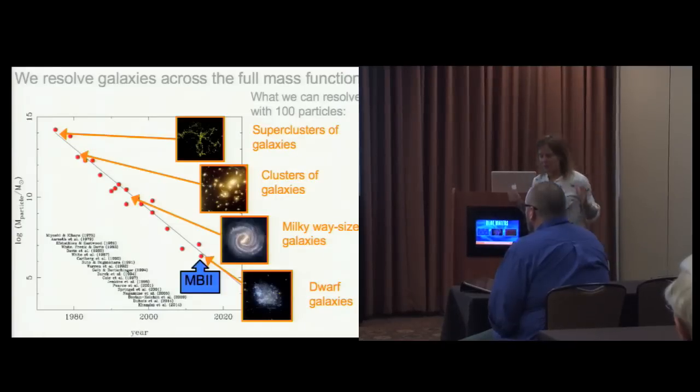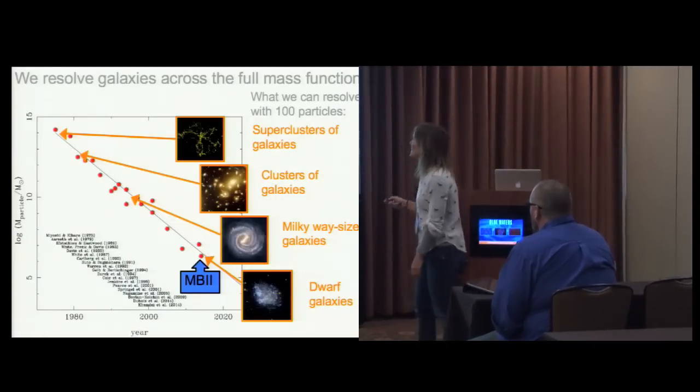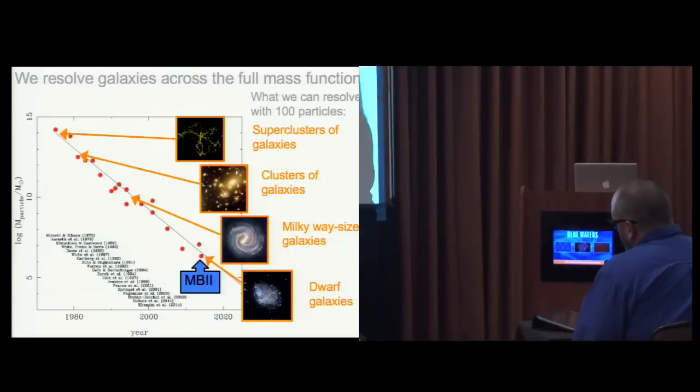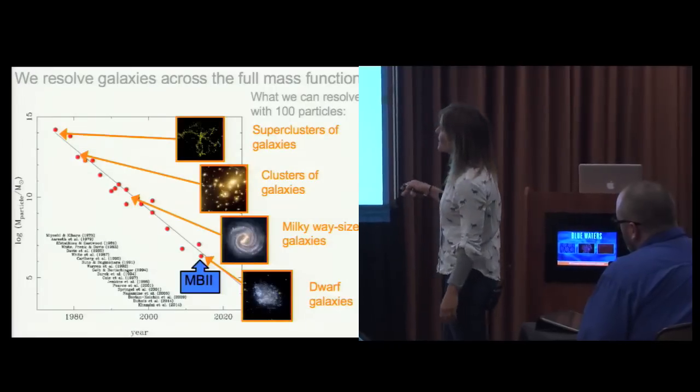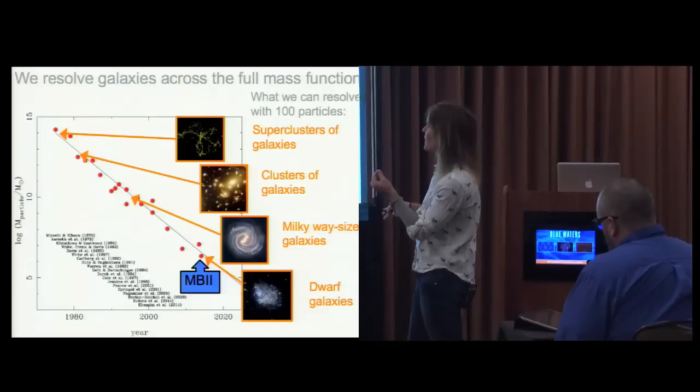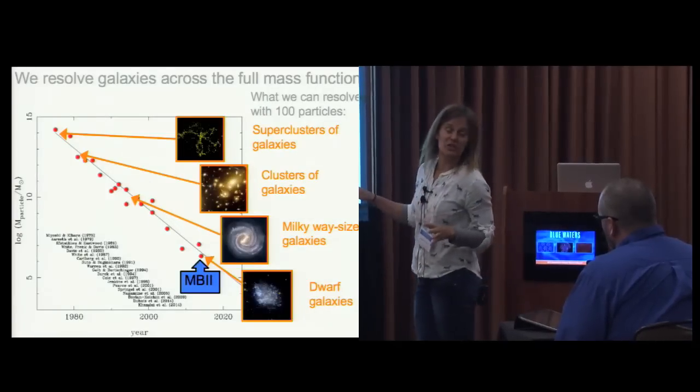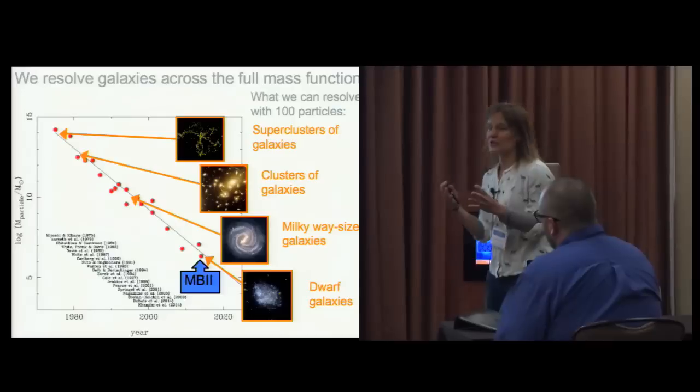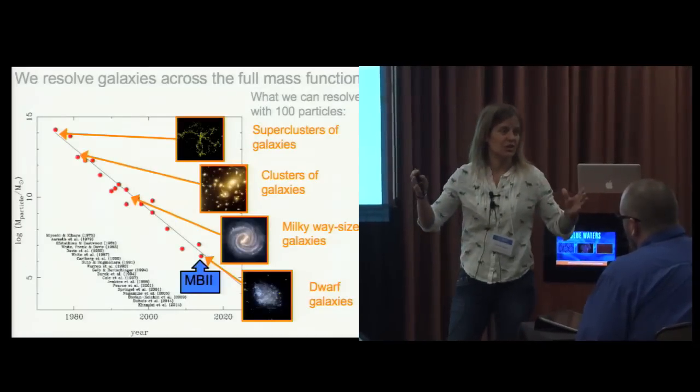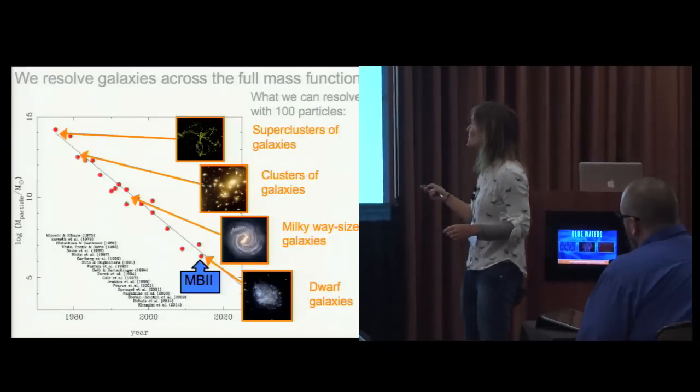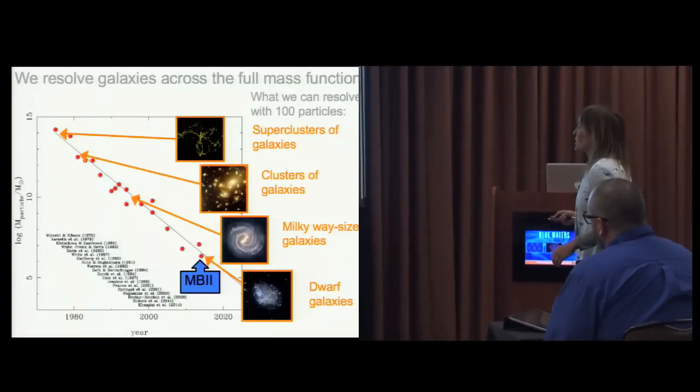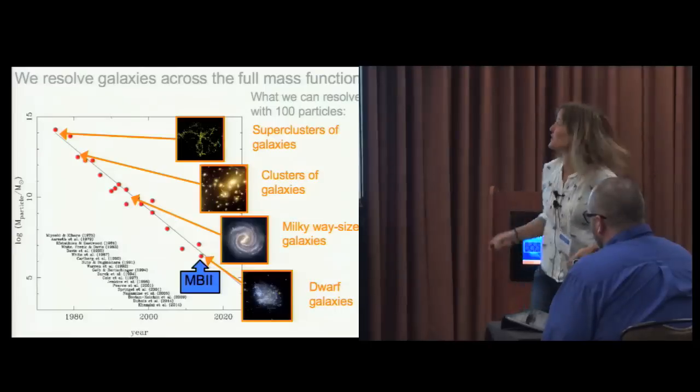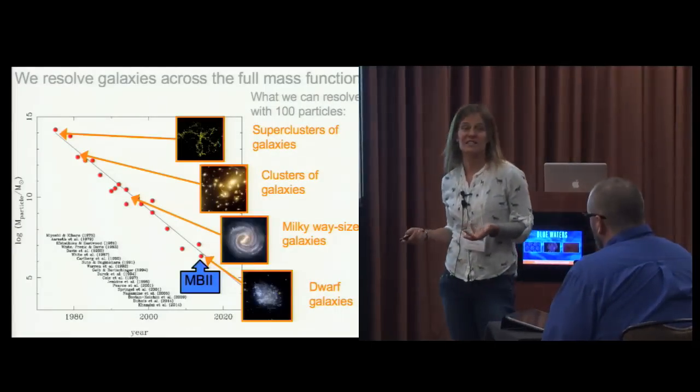What is this craziness? Why are we trying to run on this humongous thing? This shows the history of this field. This is the mass per resolution element, the mass per particle, plotted as a function of year for hydrodynamic cosmological simulations. The mass per resolution element was very large early on, so we were only able to really simulate the largest structures in the universe, the big clusters of galaxies.